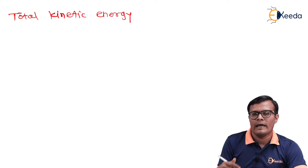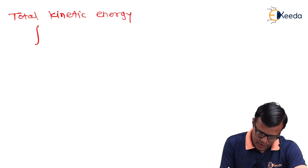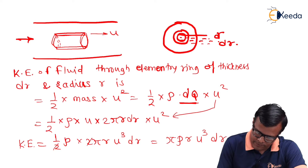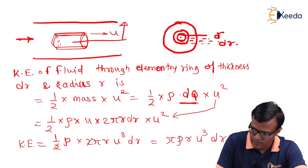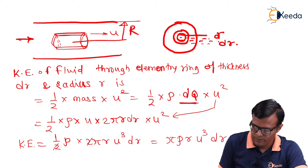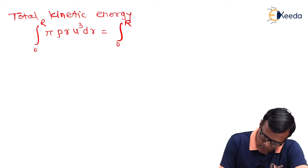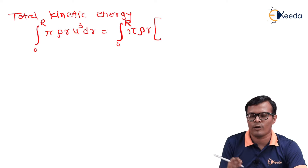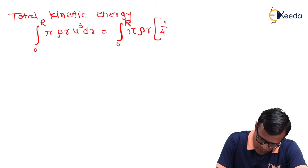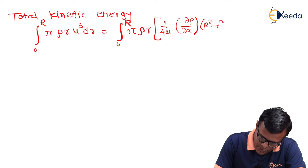So total kinetic energy will be the integral of that equation — integration from 0 to radius capital R. Here in the diagram, the total radius is capital R. So integral from 0 to R of πρ·r·u³·dr. The constant terms are πρ. The velocity value u has the basic relation: u = (1/4μ)(−∂p/∂x)(R² − r²). This whole expression is cubed, times r·dr.